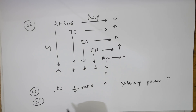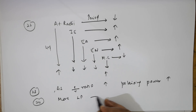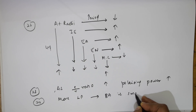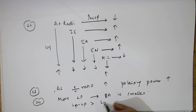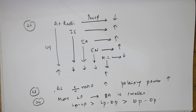The 24th concept: more lone pairs present means the bond angle will be smaller. Also remember that lone pair–lone pair (lp-lp) repulsions are greater than lone pair–bond pair (lp-bp) repulsions, which are greater than bond pair–bond pair (bp-bp) repulsions.